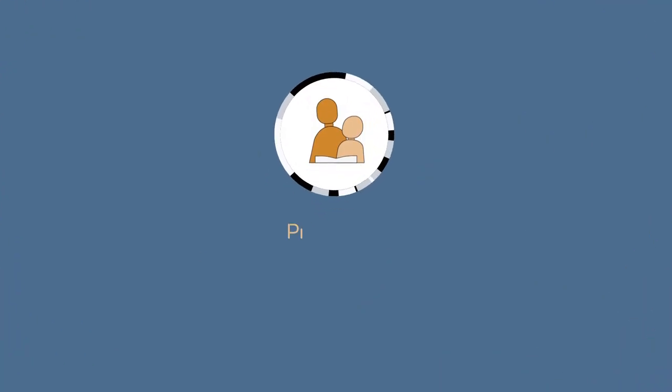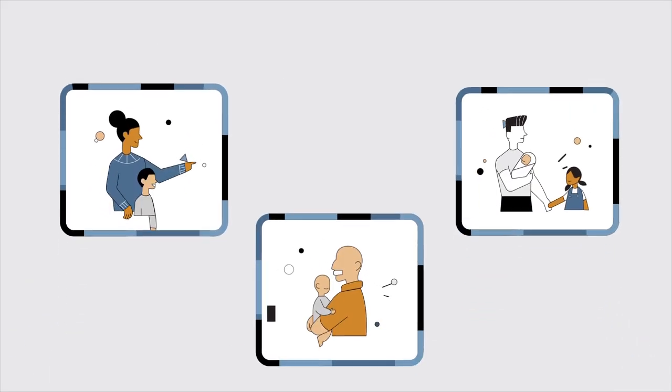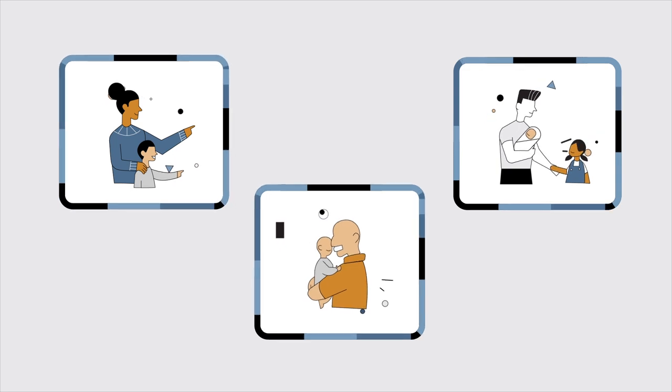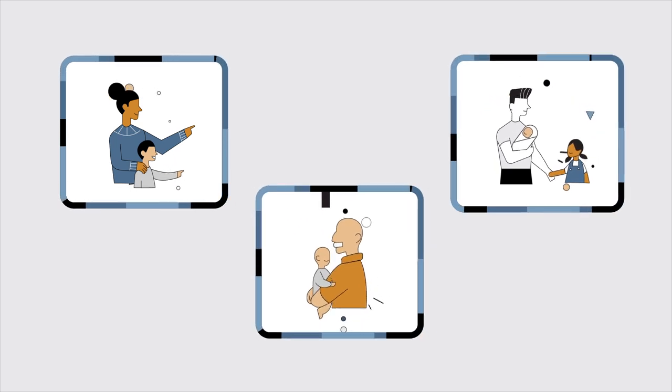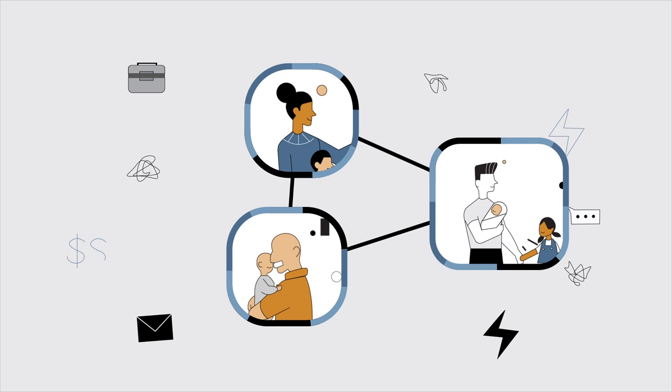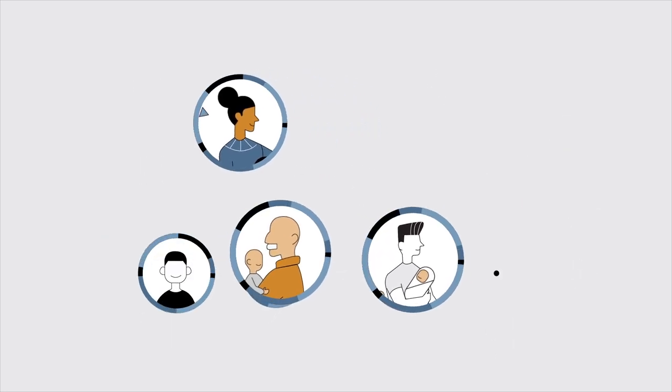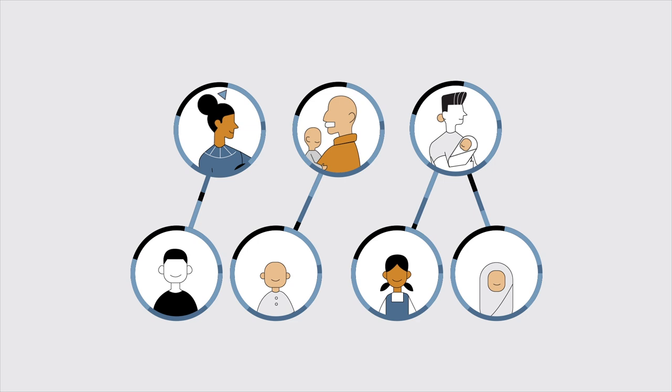Principle 1. Support responsive relationships. Responsive serve and return interaction between adults and young children builds healthy brain architecture. Relationships help adults deal with life's challenges and help children build resilience.